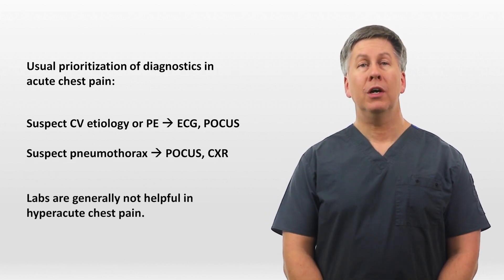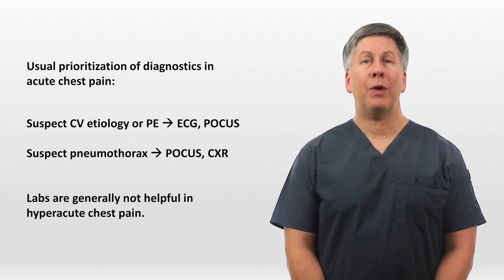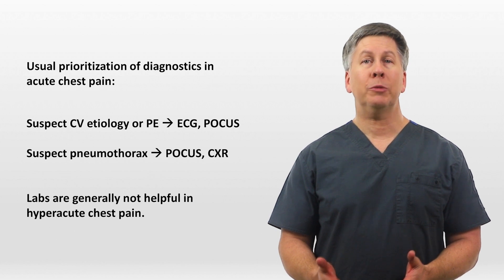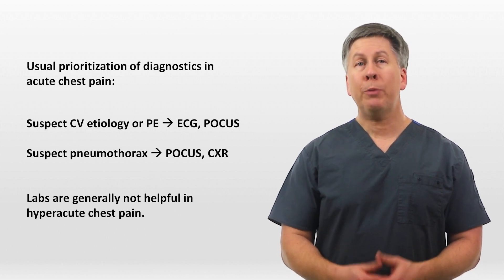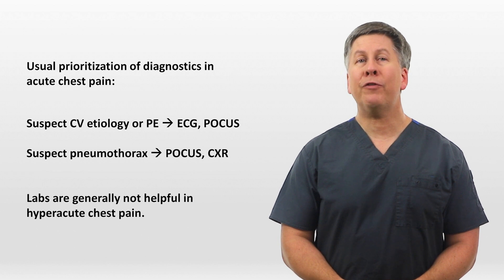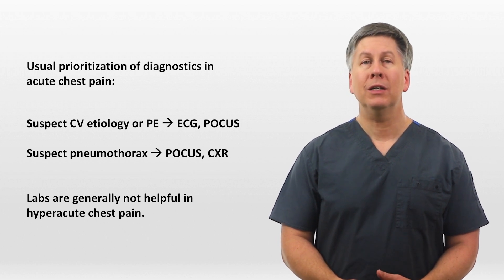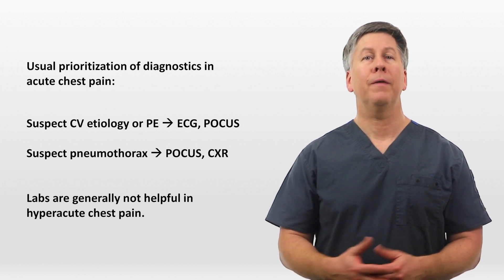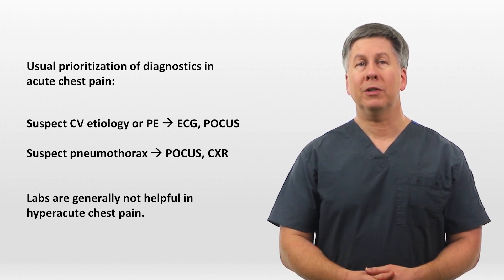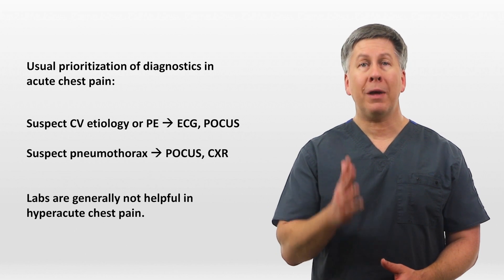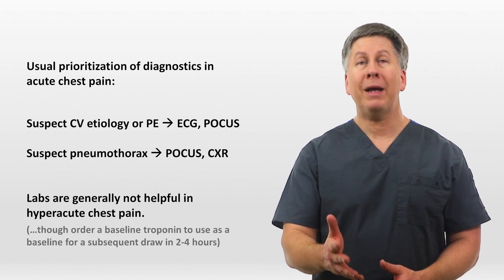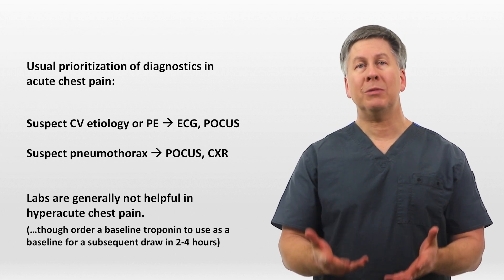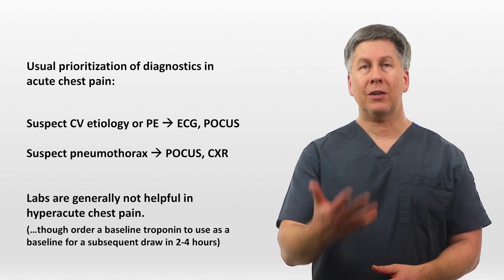Labs — meaning blood tests — are generally not helpful in the evaluation of hyperacute chest pain. Among the etiologies listed, troponin may be elevated in a handful, but even for high-sensitivity troponin assays, some time needs to elapse — an hour give or take — before an increase is observed. The only reason to get a troponin at the onset of pain is for a baseline to which a later value can be compared, which is not as time-sensitive as the other diagnostics.